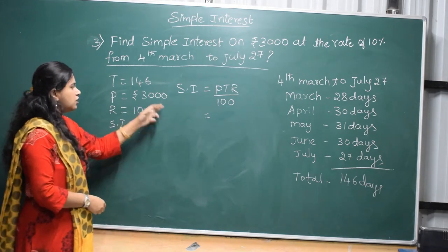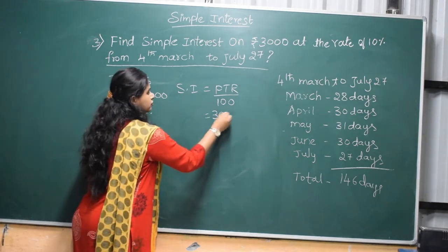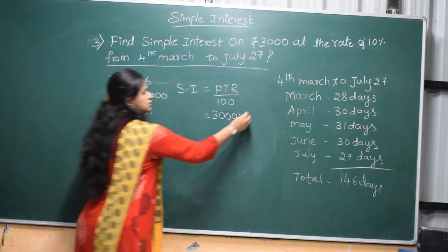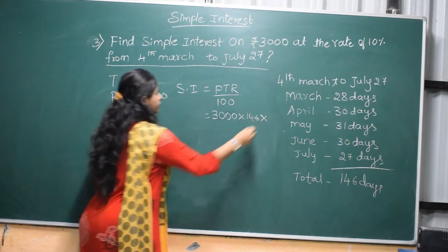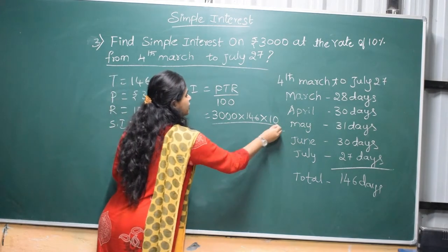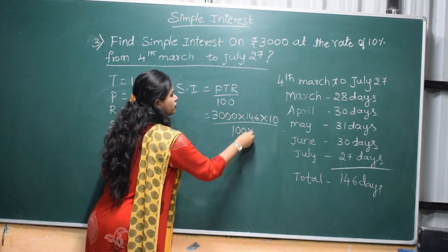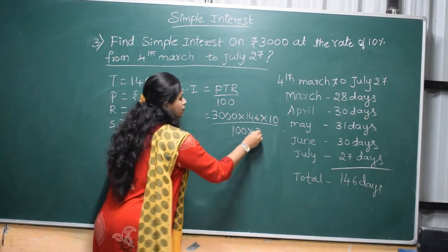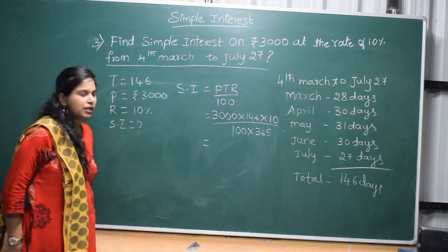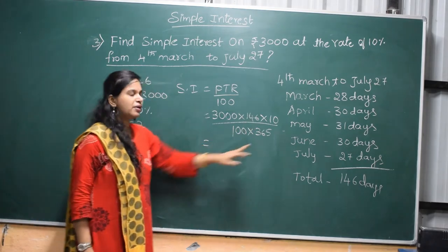Now, principle is 3000 into time, 146 days, into rate, 10%, divided by 100 into 365 per year. So how many days per year? Divide it by 365.